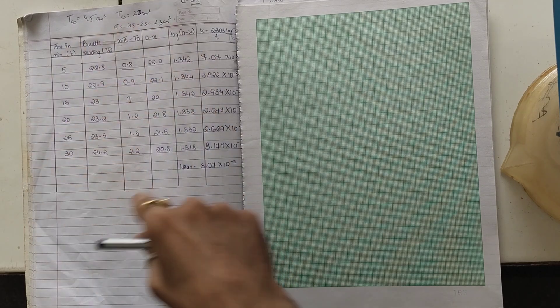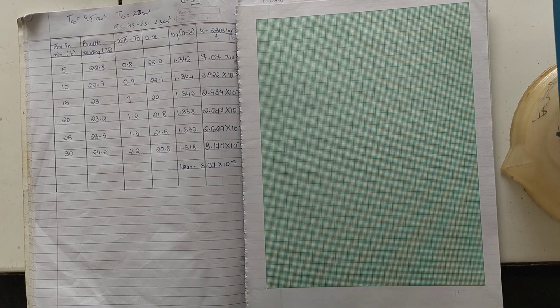We have readings over here. This is an experiment based on chemical kinetics. It is hydrolysis of ester in presence of an acid, so we call it acid hydrolysis.